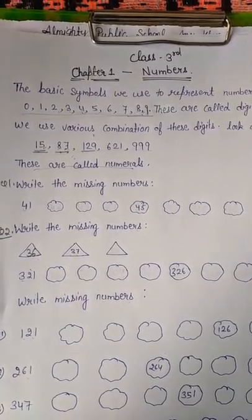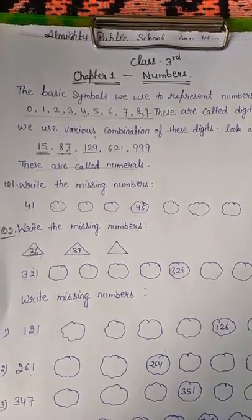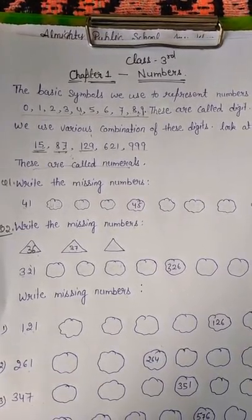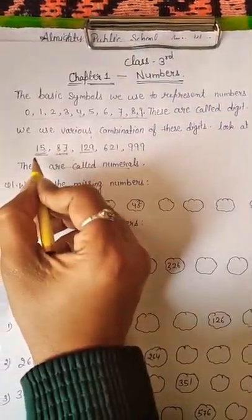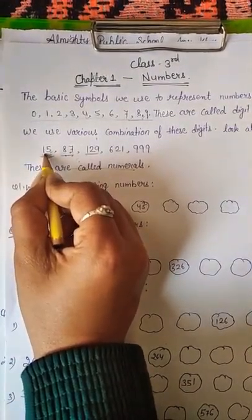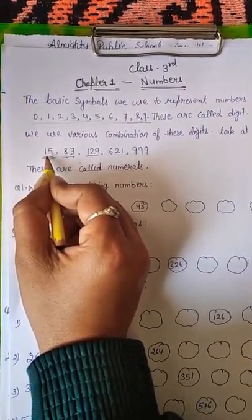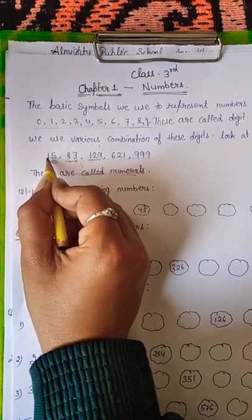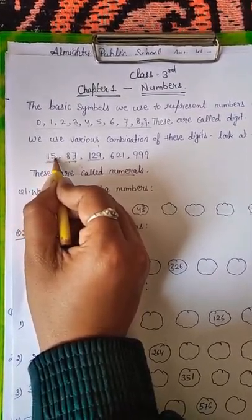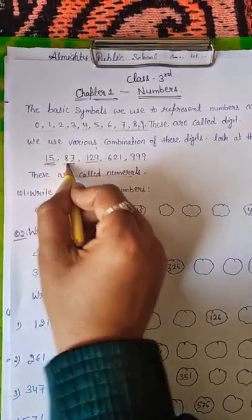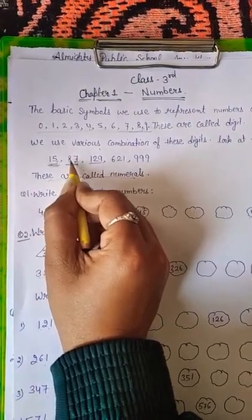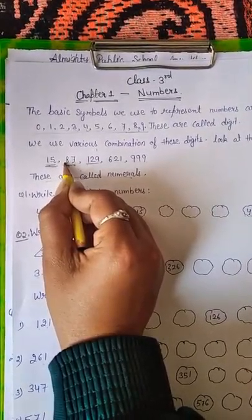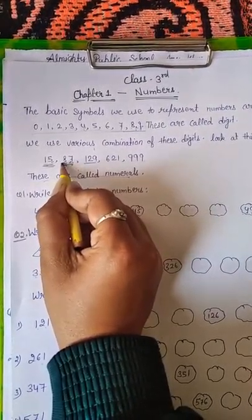And these numerals are made by using these digits. Like 15. This is a numeral. And this numeral is a combination of two digits. That is 1 and 5. And 1, 5 is 15. 87. This is also a numeral. And this numeral is a combination of two digits. 8 and 7. That is 87.